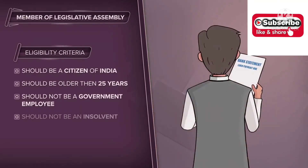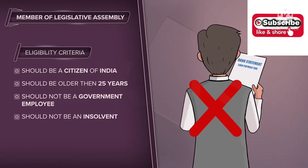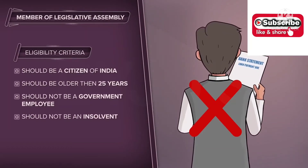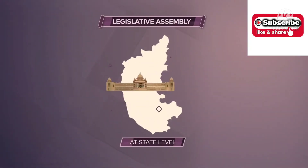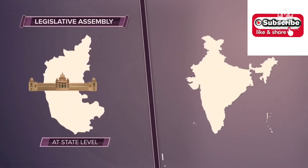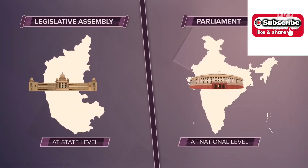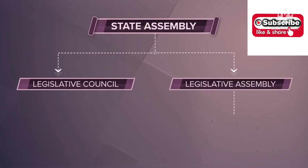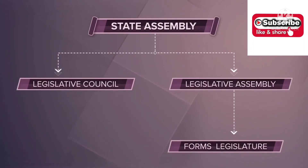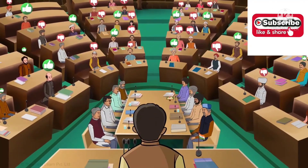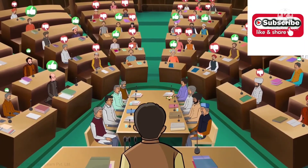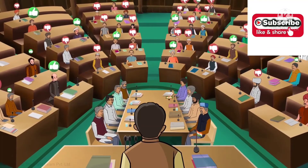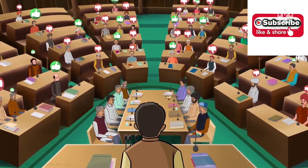Lastly, he or she should not be a person who is unable to repay his or her debts — in other words, the candidate should not be an insolvent. Regarding the powers and functions of the Legislative Assembly: in all financial matters, the decisions of the assembly are final. The Chief Minister, his ministers, or other officials cannot spend government money without the permission of the Legislative Assembly.